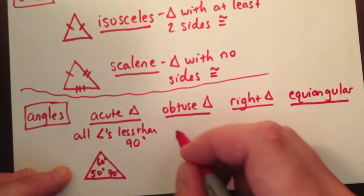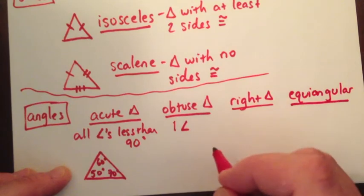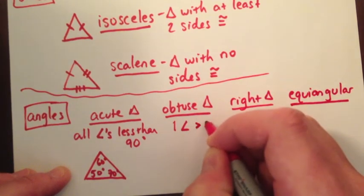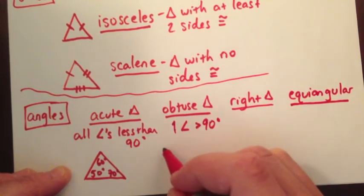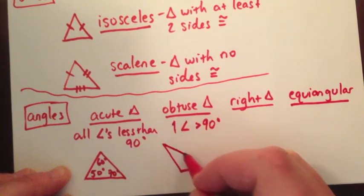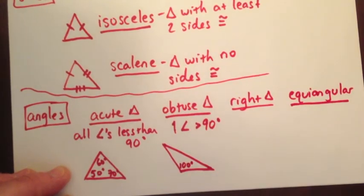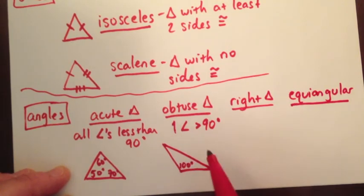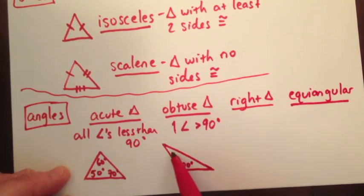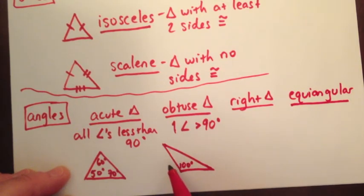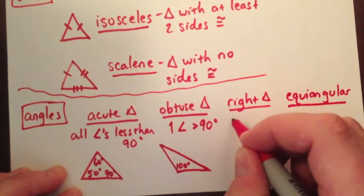An obtuse triangle has one angle greater than 90 degrees. For example, if one angle is 100 degrees, the other two must both be less than 90. You can only have one obtuse angle because the angles must add up to 180 — if two angles were each 100 degrees, that alone would exceed 180, which doesn't make sense.